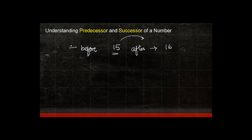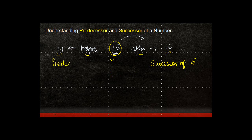The number which comes before 15 is 14. In mathematical terms, the number 16 which comes after 15 is the successor of 15, and the number which comes before 15 — that is 14 — is known as the predecessor of 15. A number which comes before a given number is its predecessor, and the number which comes after is its successor.